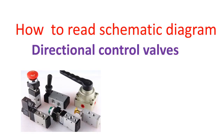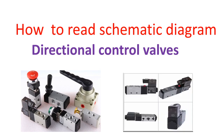Directional control valves perform only three functions: allow airflow, stop airflow, and change direction of airflow. One of the basic directional control valves is the two-way valve, which either stops flow or allows flow. A garden faucet is a good example.